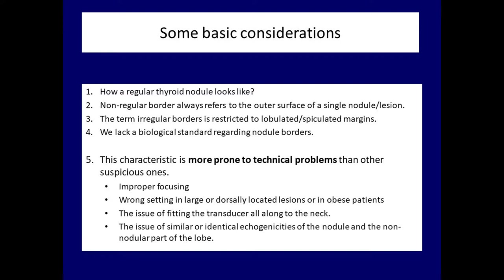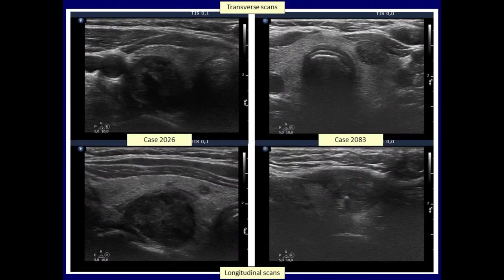Another unavoidable issue is that it is not always possible to fit the probe all along to the neck of the patient. In nodules whose echogenicity is very similar or identical to the neighboring non-nodular tissue, the nodule borders can also be indistinctive. The medial part of the left nodule is blurred on transverse scan because of improper fitting of the transducer to the neck; on longitudinal section, the borders are sharp. This is not a coincidence — simply because of anatomy, the probe can be fit more easily on longitudinal scan than on transverse section.